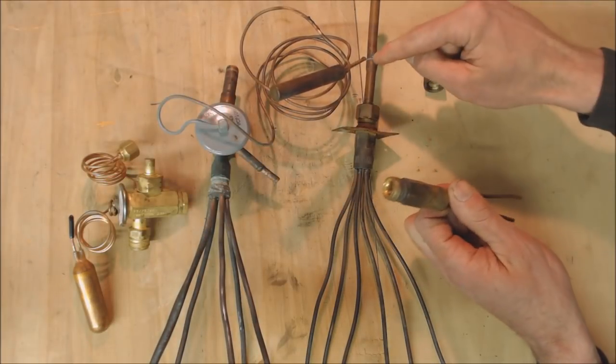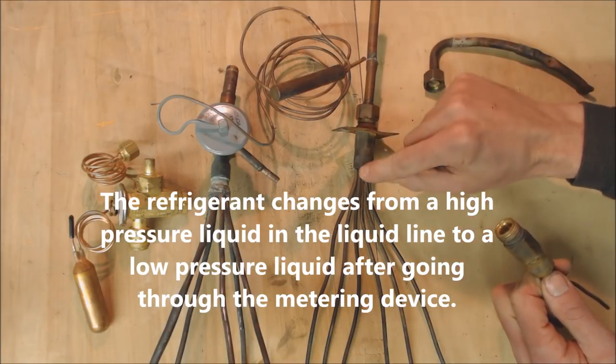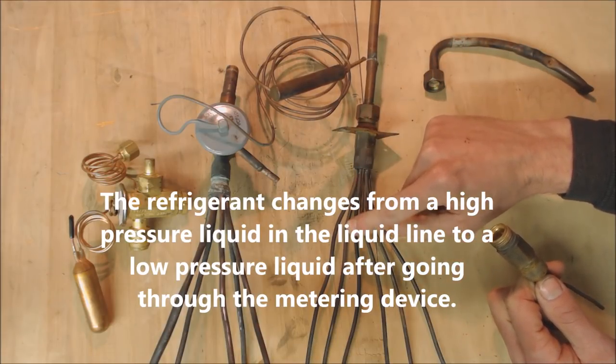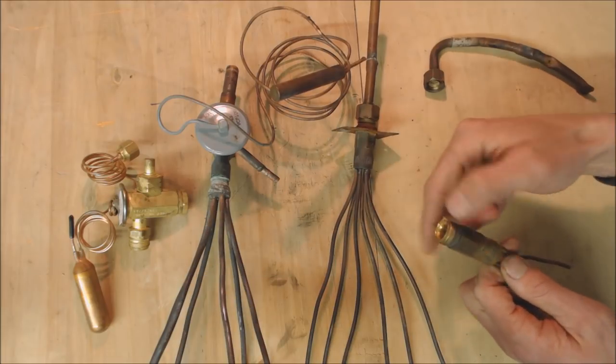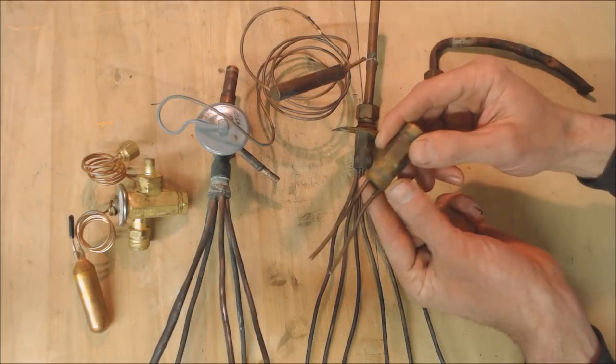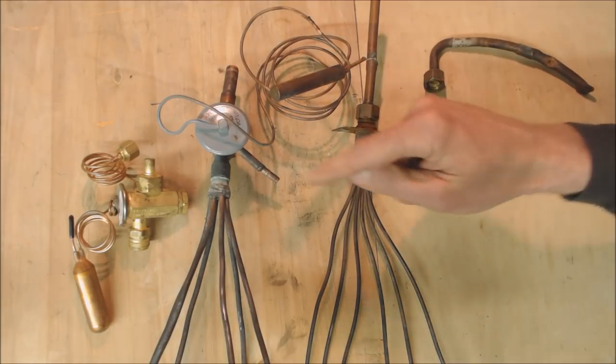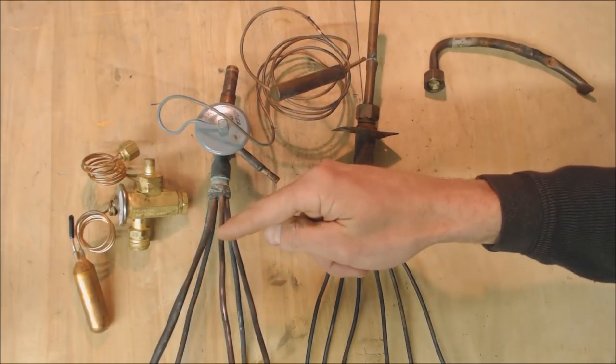After the refrigerant turns from a high pressure, high temperature liquid, it hits the metering device and goes into the distributor tubes that enter the evaporator coil. This one has six distributor tubes and this one has two. Even if you have a TXV, you're still going to need the distributor tubes to go to the evaporator coil.